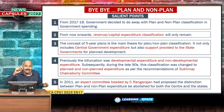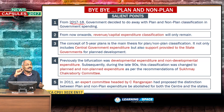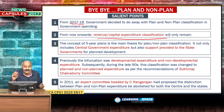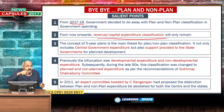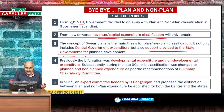From the 2017-18 budget, the government decided to do away with the classification of plan and non-plan. From now onwards, only the revenue-capital expenditure classification will remain. The concept of five-year plans is the main basis for plan non-plan classification. It not only includes central government expenditure but also support provided to state governments for planned development.